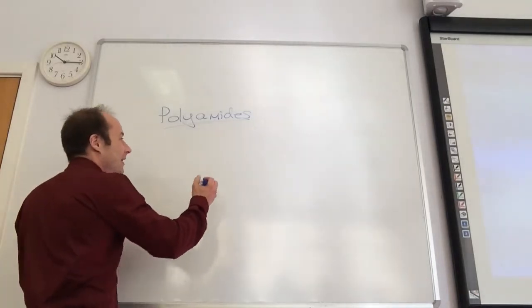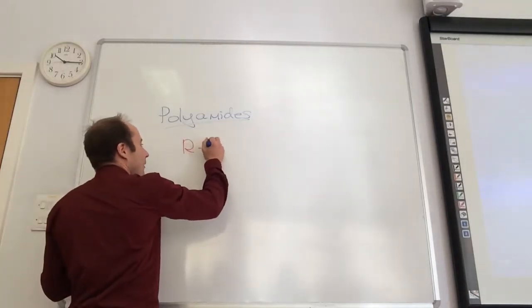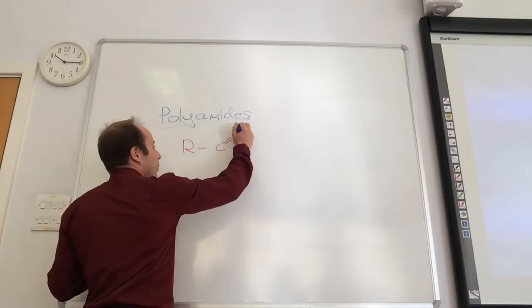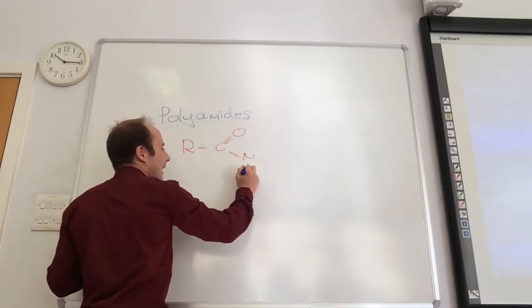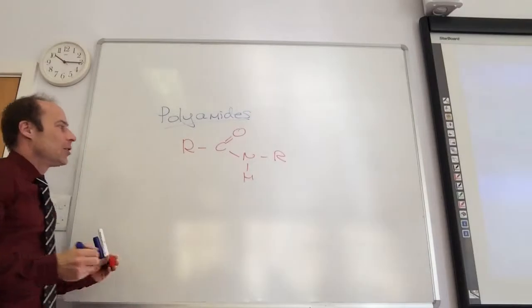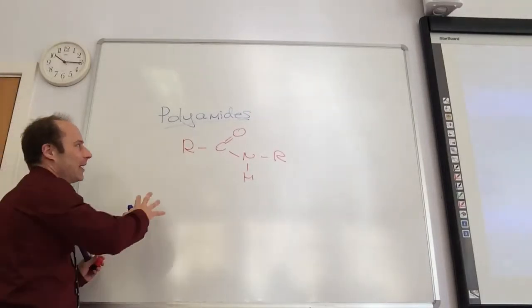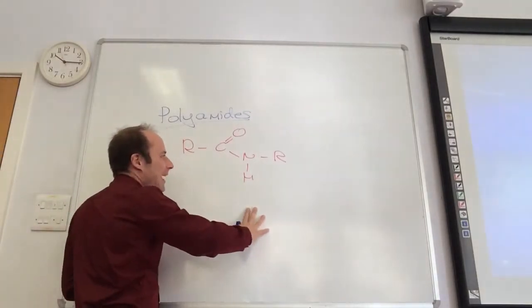Amides contain the R, C double bond O, N, H, and then another R2. So they're going to have that group in, but it's going to be a polyamide.